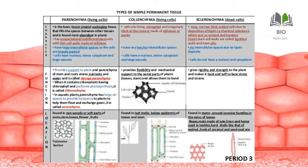Collenchyma cells do not have intercellular spaces. They have nucleus, cytoplasm, and large vacuoles. The main function of collenchyma is to provide flexibility and mechanical support to the aerial parts of plants. Because of the thickening at the corners, the plant can bend rather than break — collenchyma allows this flexibility.